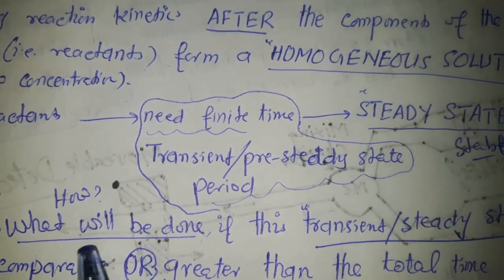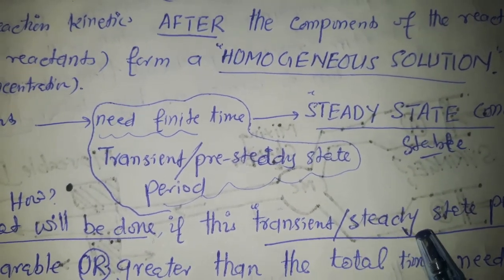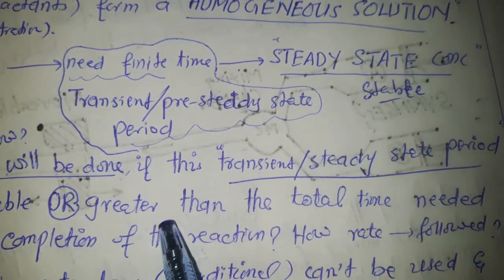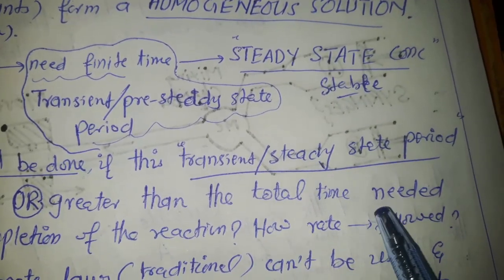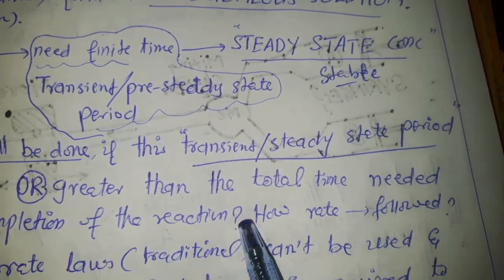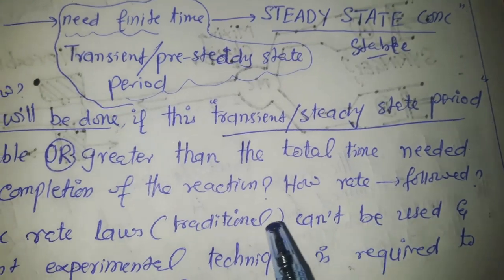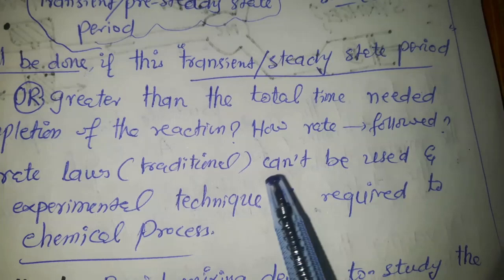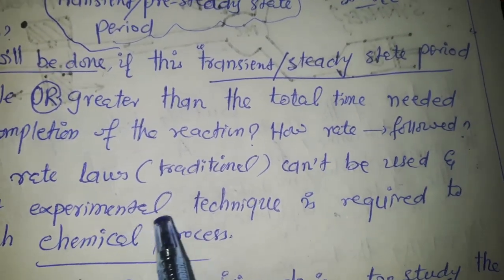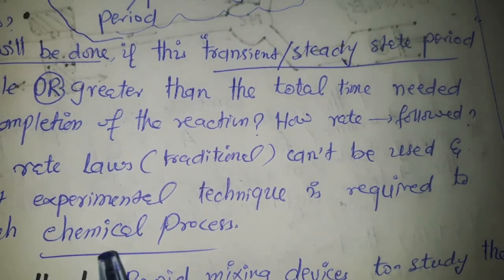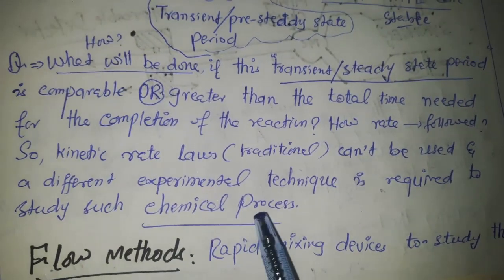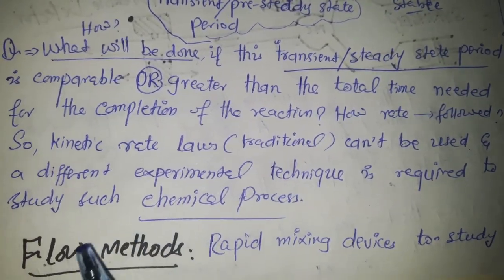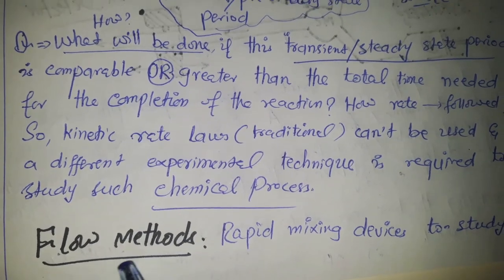There is an important question in kinetics: what happens if this transient or pre-steady-state period is comparable to or greater than the total time needed for the completion of the reaction? Then the rate cannot be followed by traditional methods. Traditional kinetic rate laws cannot be used in such cases, and a different experimental technique is required to study such chemical processes.